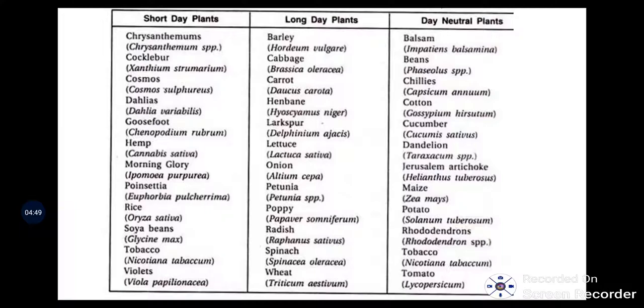Examples of day neutral crops are beans, chilies, cotton, cucumber, dandelion, maize, potato, tobacco, tomato, and sunflower. These are all day neutral crops.